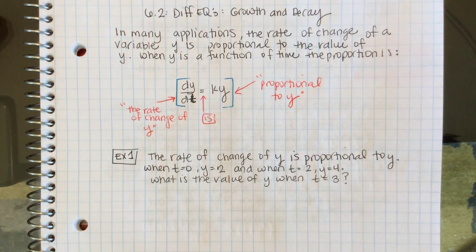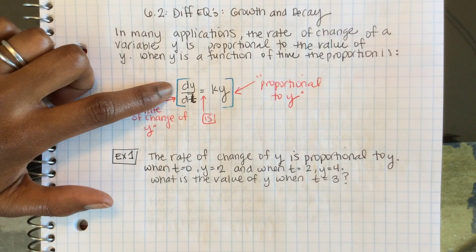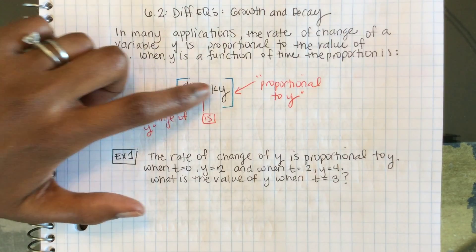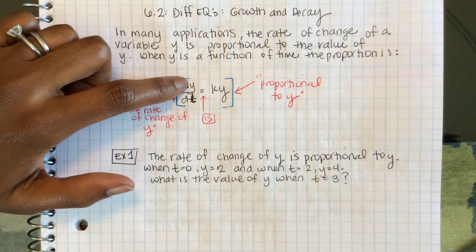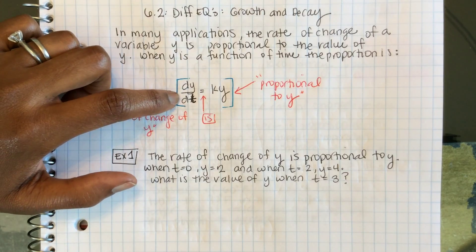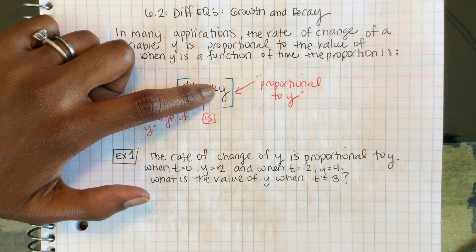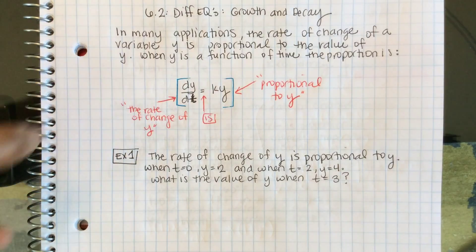Hi guys, welcome back to section 6.2, Differential Equations: Growth and Decay. In many applications, the rate of change of a variable is proportional to the value of y. When y is a function of time, the proportion reads: the rate of change of y is proportional to y. So dy/dt equals some constant k multiplied by y.